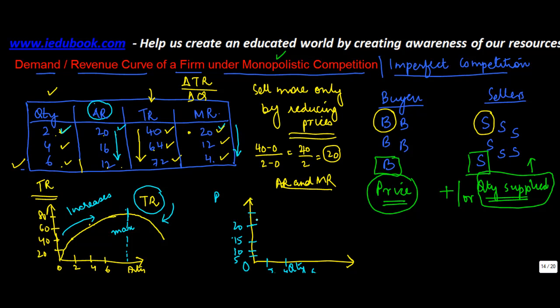Now, if you plot the average revenue and marginal revenue curves, let's start building them. At quantity of 2, average revenue is 20 and marginal revenue is 20, so both of them are somewhere around here. At 4, average revenue is 16.